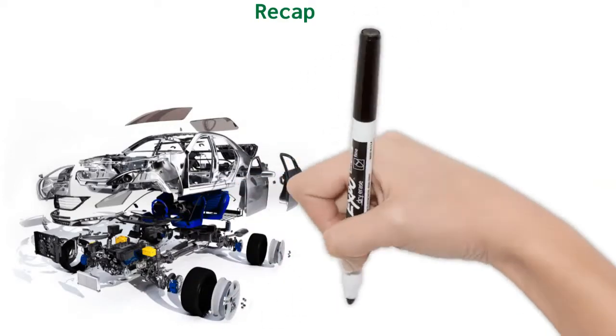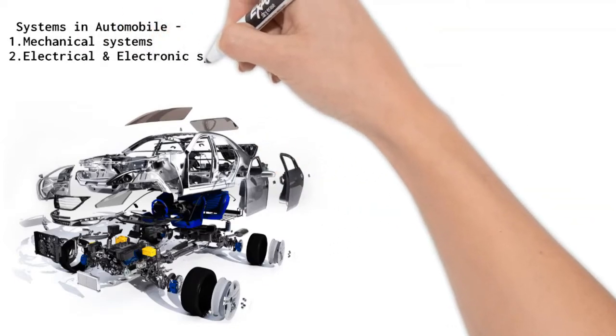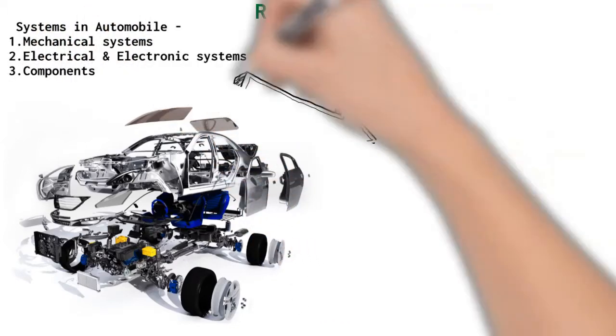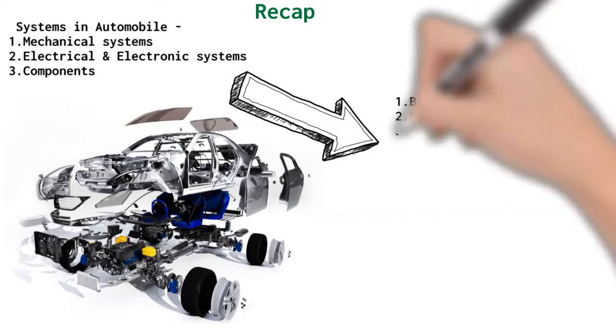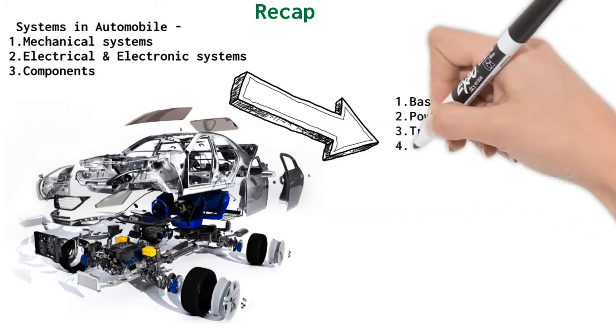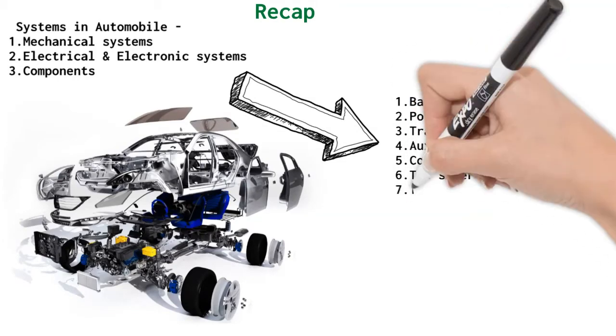We know that all mechanical systems, electrical systems and components of vehicle can be placed under the following seven groups: basic structure, power plant, transmission system, auxiliaries, controls, superstructure, and tools and miscellaneous components.